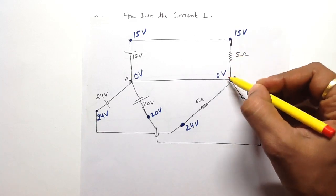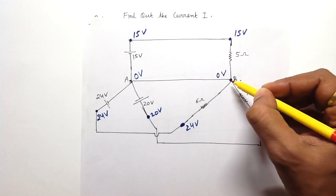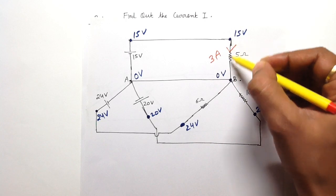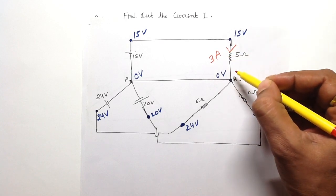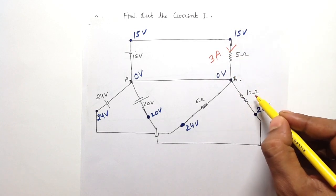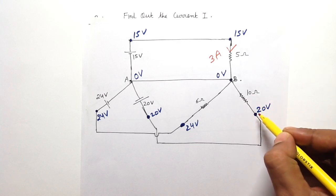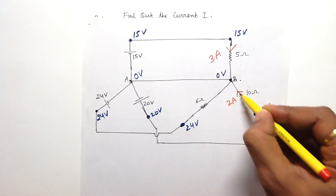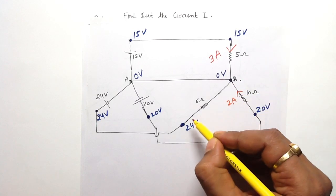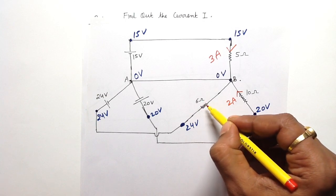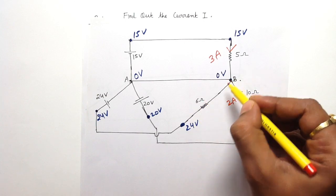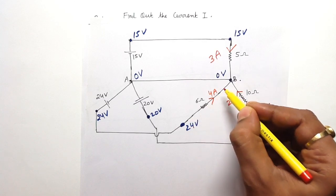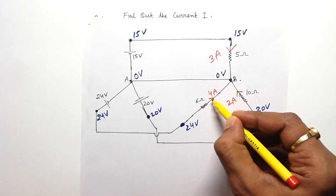The current in the 5 ohm resistance is (15 − 0) / 5 = 3 ampere. The current in the 10 ohm resistance is (20 − 0) / 10 = 2 ampere. The current in the 6 ohm resistance is (24 − 0) / 6 = 4 ampere.